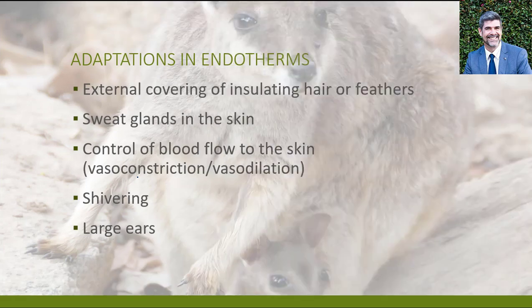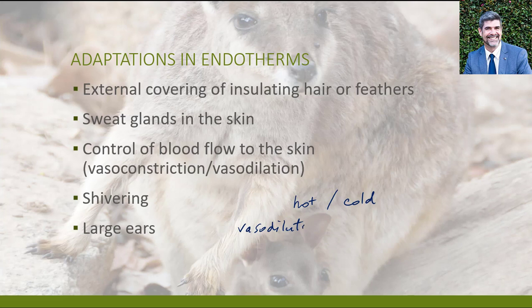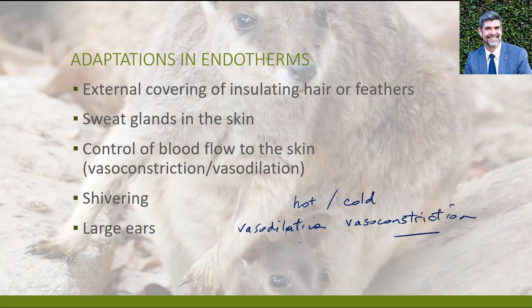Some general adaptations in endotherms depend on whether they are in a very hot or cold environment. In a hot environment, vasodilation is common because extra blood flow helps with perspiration or sweating for evaporative cooling. In a cold environment, you want warm blood directed back to key organs like the brain and heart, so vasoconstriction occurs. This is so effective that in really cold environments, your body will actually sacrifice extremities like fingers to pull blood back towards those vital organs at the centre of your body.